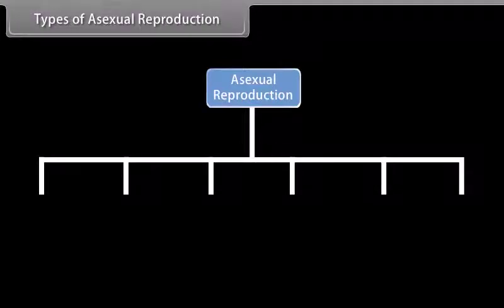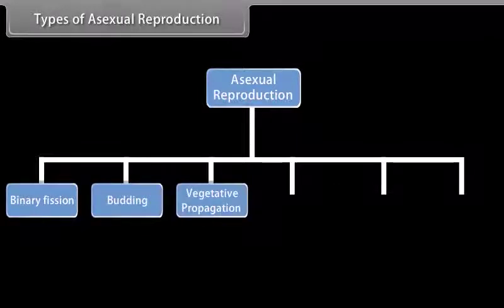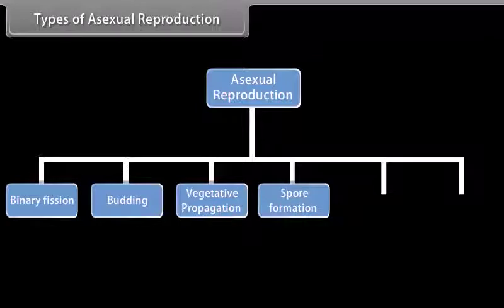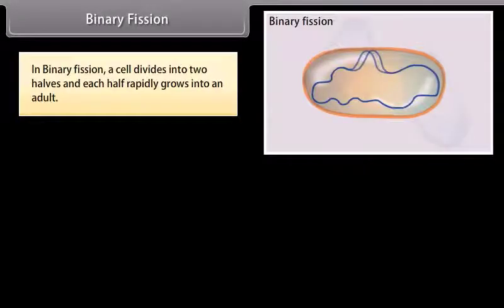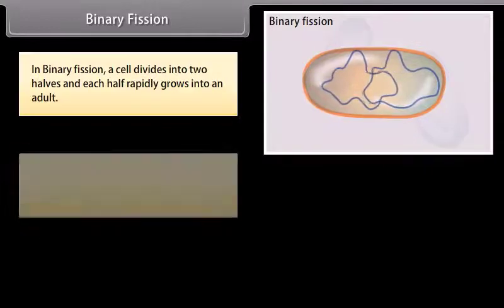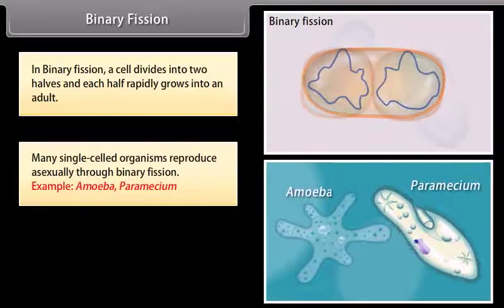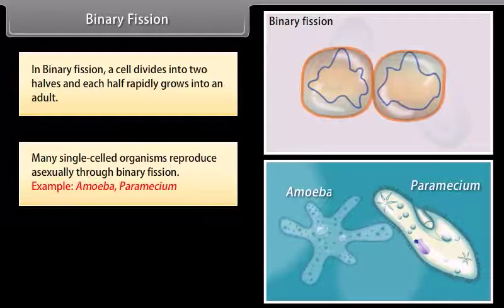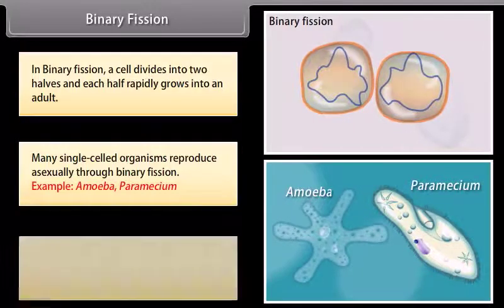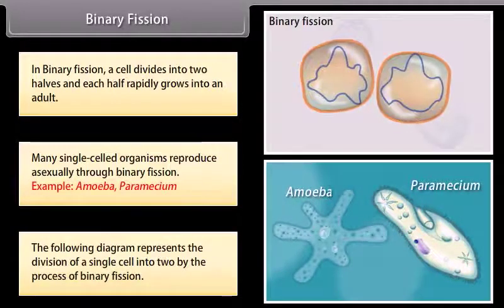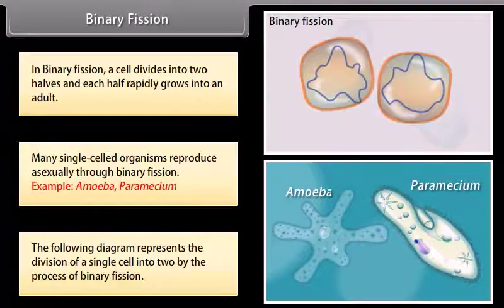An organism may reproduce asexually by binary fission. In binary fission, a cell divides into two halves and each half rapidly grows into an adult. Many single-celled organisms reproduce asexually through binary fission. Examples include Amoeba and Paramecium. The following diagram represents the division of a single cell into two by the process of binary fission.